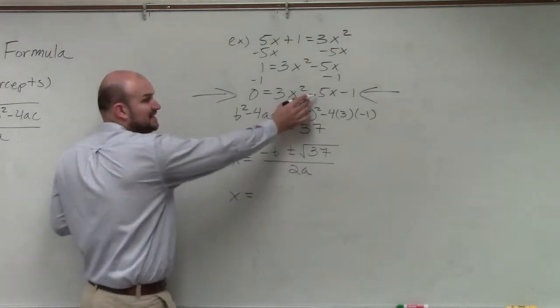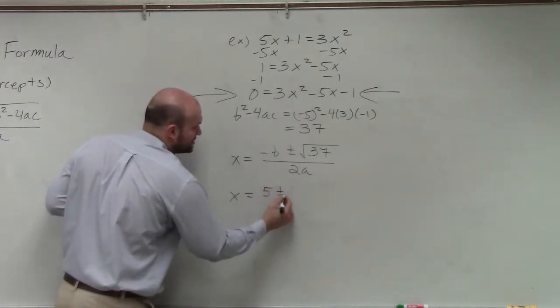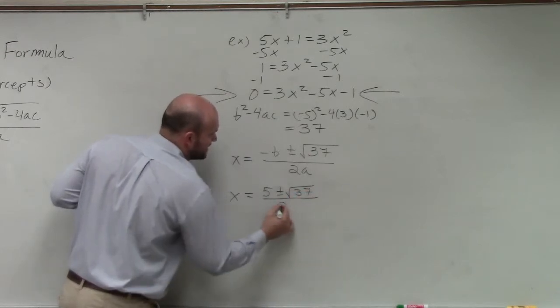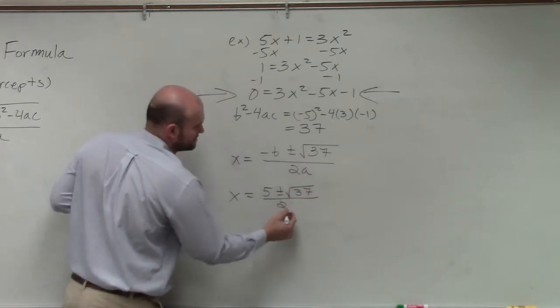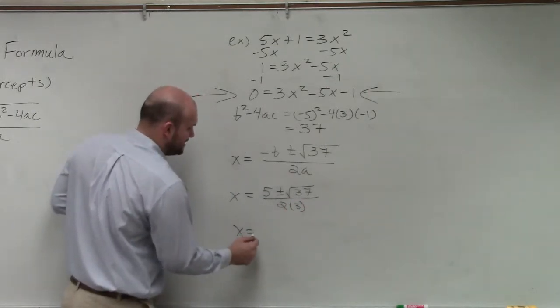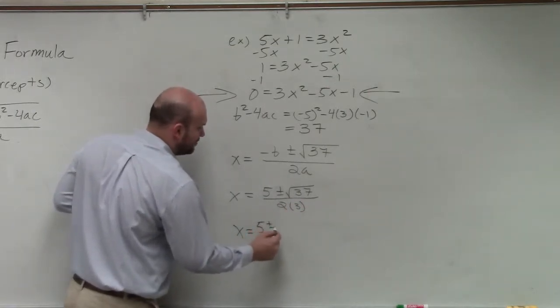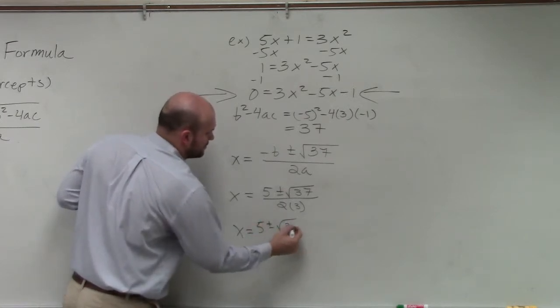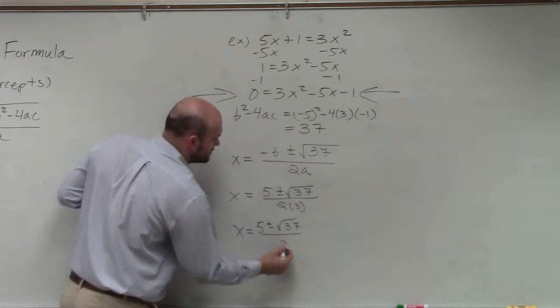My opposite of b, if b is negative, the opposite of that is positive 5, plus or minus the square root of 37 divided by 2 times a, which is 3. So therefore I have x equals 5 plus or minus the square root of 37 all over 6.